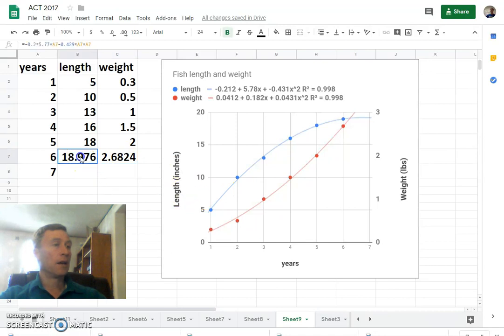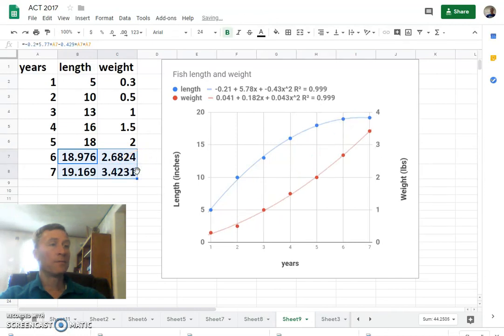And now if we click and drag, then we can do year 7. It automatically updated the graph to predict those two that we didn't actually measure. We're just kind of predicting. So that's how you extrapolate using Google Sheets.